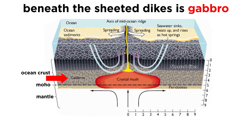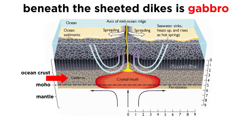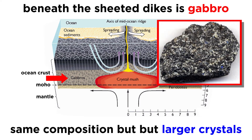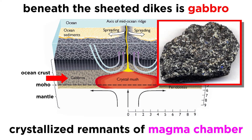Beneath the sheeted dike complex is a layer of coarser-grained igneous rock called gabbro, which has the same composition as the above pillow basalt. Gabbro has larger crystals because it cools much more slowly, as it is not near the ocean water. In fact, the gabbro layer is basically the crystallized remnants of the magma chamber that was responsible for feeding all the volcanism along the ridge.